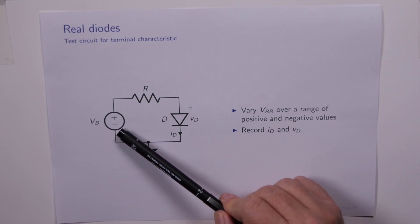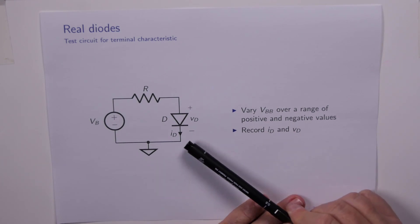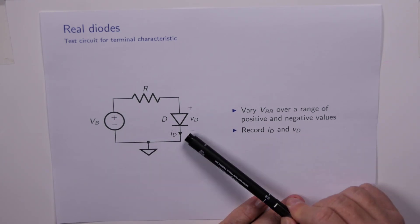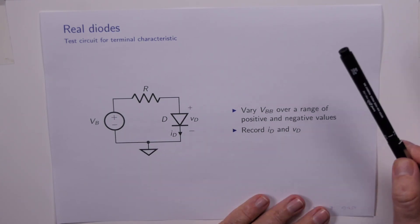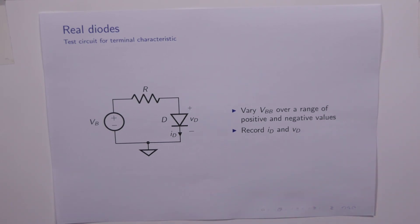So we're going to vary VB over a range of voltages, negative and positive, and at each setting of VB we measure ID and VD and then plot the graph.